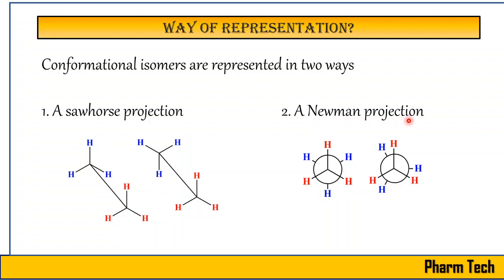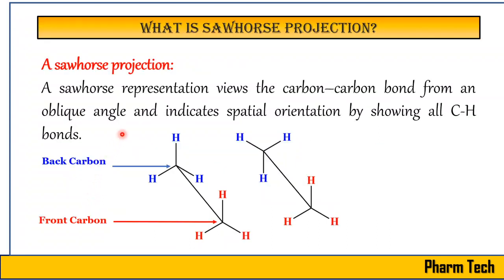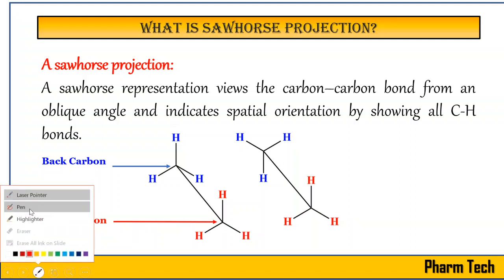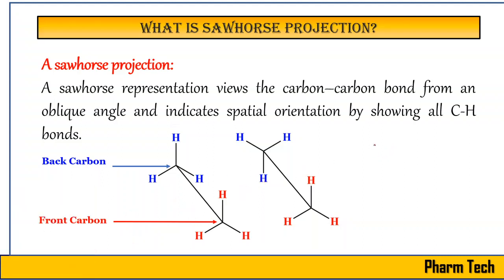If we draw conformational isomers in a normal line format, we will not be able to distinguish them. So we use the sawhorse projection and the Newman projection. In a sawhorse projection, we draw ethane as a simple molecule with one carbon having three hydrogens, and again one more carbon with three hydrogens.